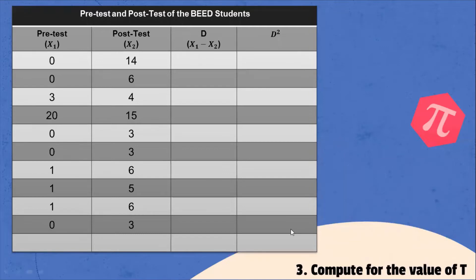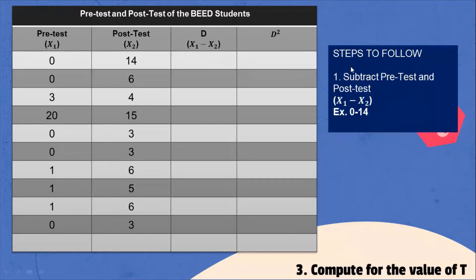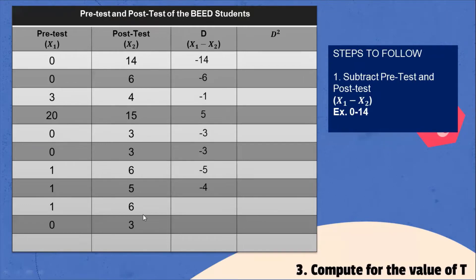Step three: compute the value of t. Step one within this: subtract pre-test from post-test (X₁ minus X₂). The differences (d values) are: 0 minus 14 = negative 14; 0 minus 6 = negative 6; 3 minus 4 = negative 1; 20 minus 15 = 5; 0 minus 3 = negative 3; 0 minus 3 = negative 3; 1 minus 6 = negative 5; 1 minus 5 = negative 4; 1 minus 6 = negative 5; 0 minus 3 = negative 3.